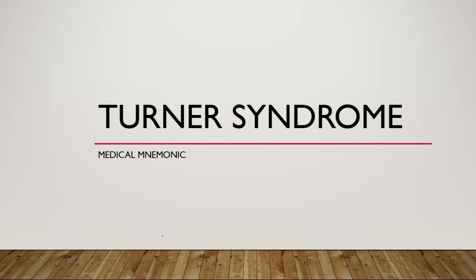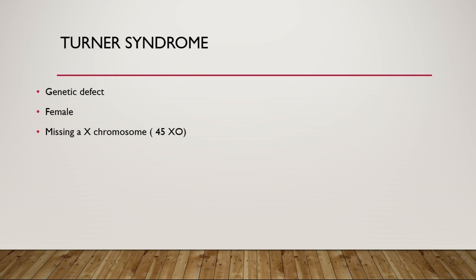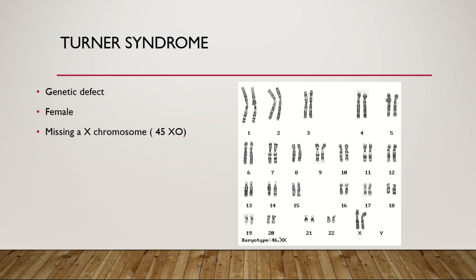Hello guys, today's video is about Turner syndrome. Turner syndrome is a genetic defect in females where the females are missing an X chromosome, and it's called 45XO. Normally it should be 46 chromosomes — in this normal karyotype you can see there are 46 chromosomes, but in the case of Turner syndrome you are missing one X chromosome.